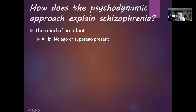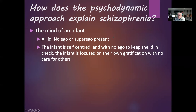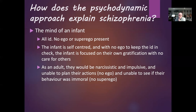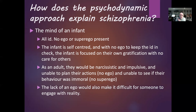The mind of an infant is all id — there is no ego or superego. The id is completely self-centred: when the baby is hungry it cries without worrying about how tired its mother is or any problems it might be causing; all it is interested in is its own gratification. As an adult who has regressed, we would see similar things: they would be narcissistic — focused only on themselves — impulsive, unable to plan their actions because they have no ego, and unable to judge whether their behaviour is moral because they have no superego.